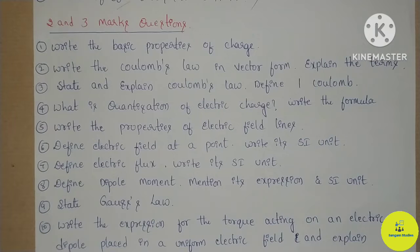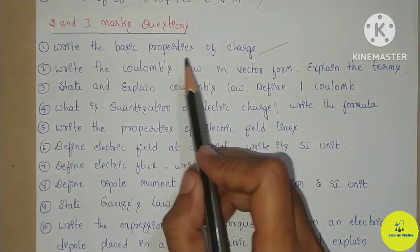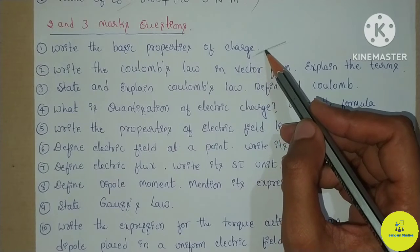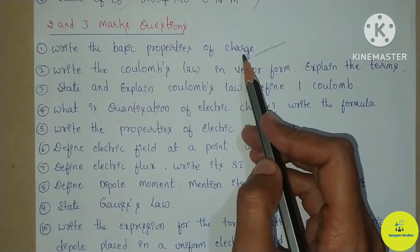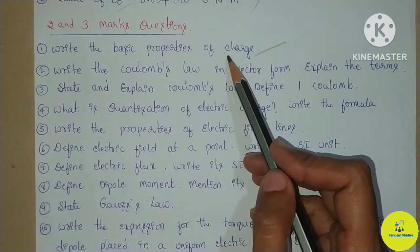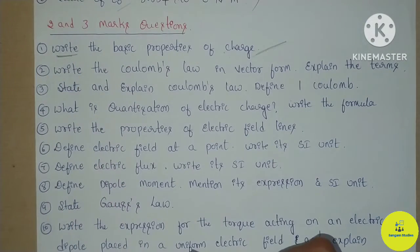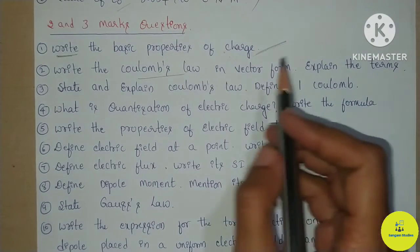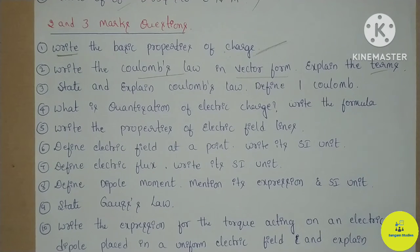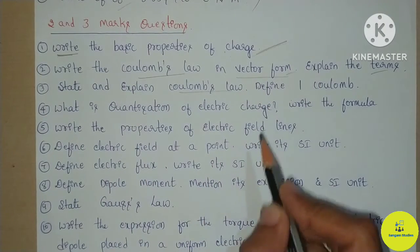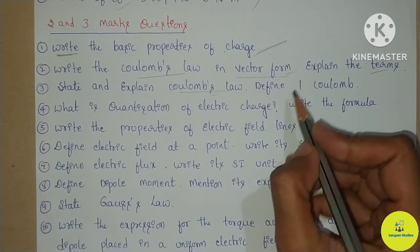Next are the two and three mark questions. In previous year question papers, the two and three mark questions often overlap — a question asked as three marks one year may appear as two marks another year. The first important question is: write the basic properties of charge — very important and a repeated question. For two marks, two or three points are enough; for three marks, three or four points. Next is Coulomb's law in vector form — two or three marks. Include the statement, mathematical expression, and definition of one Coulomb. Next is quantization of electric charge — important and likely to appear.